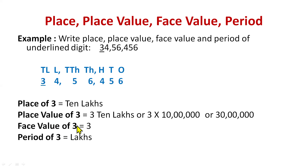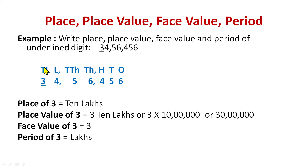Now face value of three: the face value of every digit is the number itself — so face value of three is simply three. Period of three: remember the houses — ones house is ones period, thousands house is thousands period, lakhs house is lakhs period. Three is in the ten lakhs place, but ten lakhs is the place — the period is lakhs. So the period of three is lakhs period. This way we have found the place, place value, face value and period.